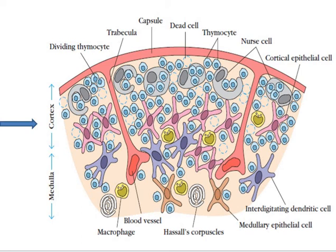T-cell precursors enter the thymus via blood vessels at the corticomedullary junction, between the thymic cortex (outer portion) and thymic medulla (inner portion). At this stage, thymocytes express neither CD4 nor CD8, the markers associated with mature T-cells, and are therefore called double negative or DN cells. DN cells first travel to the subcapsular cortex, where they proliferate and begin to generate their T-cell receptors. Thymocytes that successfully express T-cell receptors begin to express both CD4 and CD8, becoming double positive or DP cells, and populate the cortex.